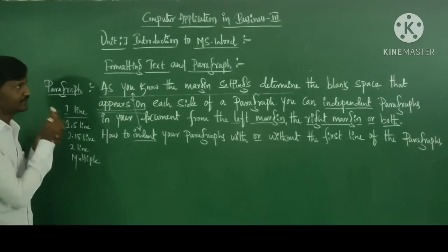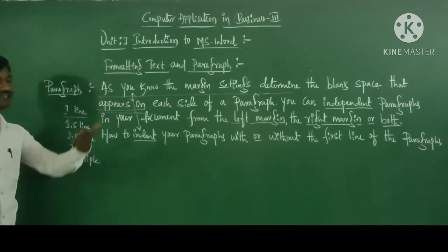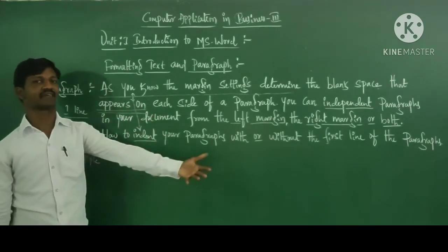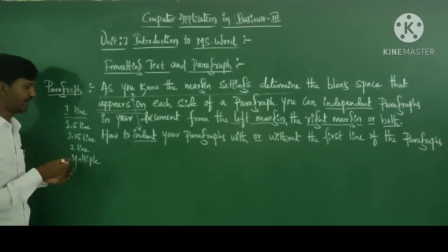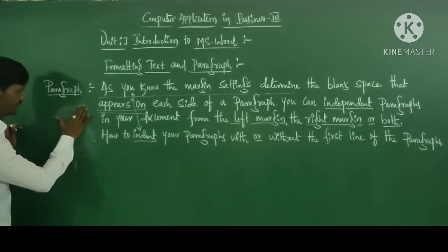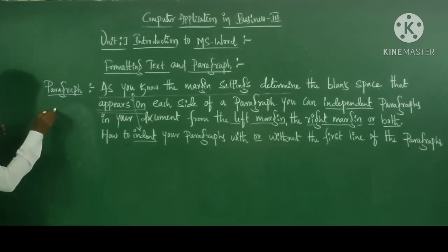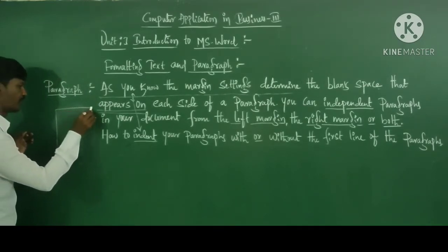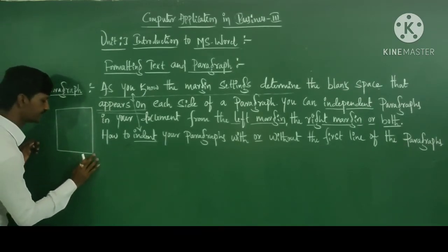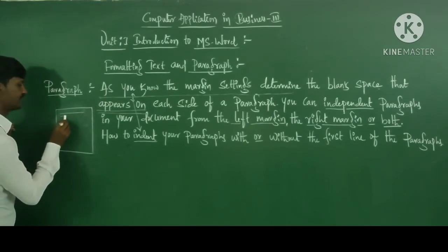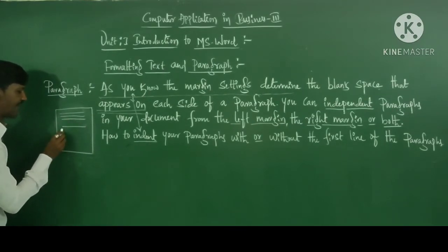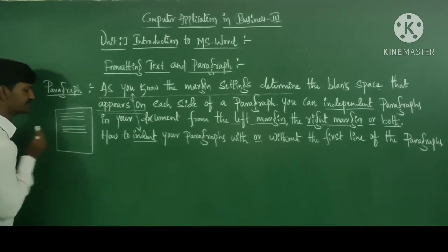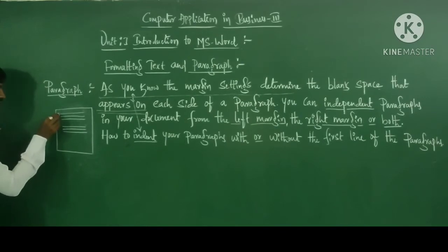This is the paragraph concept. To make use of paragraph settings in MS Word, some steps are there — we should follow the steps to set the paragraph. Assume this is your document. This document contains some number of lines: first line, second line, third line. Then leave some space — this is the second paragraph. This is the first paragraph and this is the second paragraph.